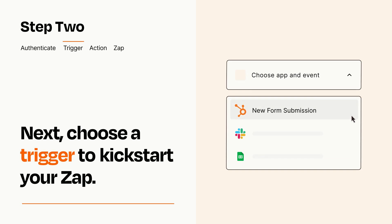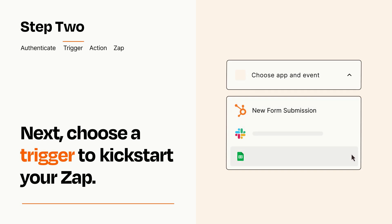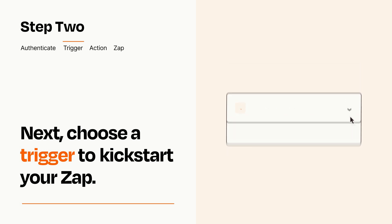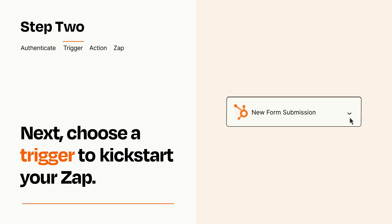Now let's set up your trigger, which is the event that starts your Zap. Pick the trigger event that you want from the list. When you set up this step, your Zap will pull in test data from your trigger app that you'll see later when setting up your action app.